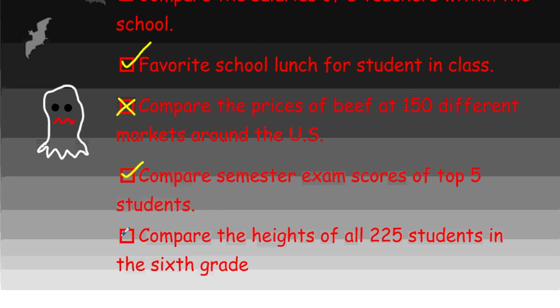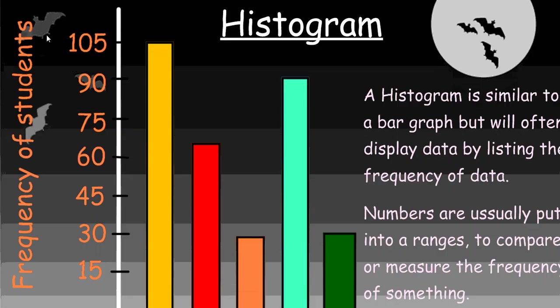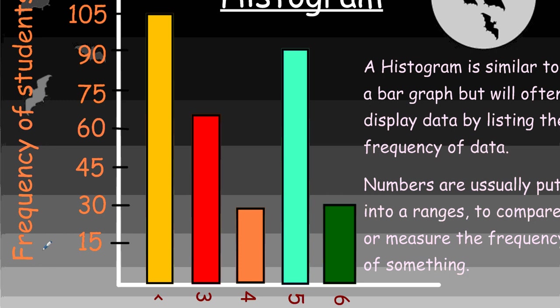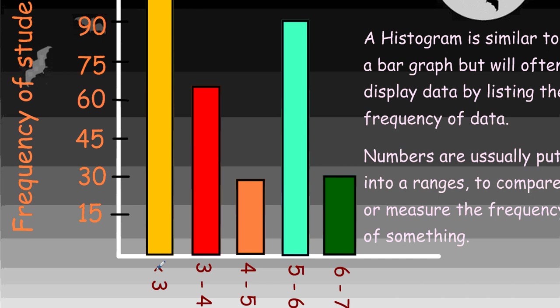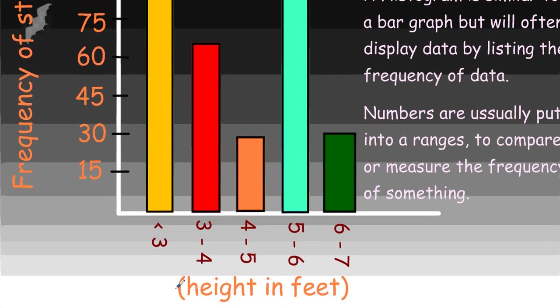Compare the heights of all 225 students in the sixth grade - no, that would not be a good one to make a bar graph for, especially considering that some of the heights could be very different. There might be five foot one inch, five foot one and a quarter inch, five foot three inches. With all those different ranges, we would actually want to use something called a histogram. A histogram helps us to see the frequency, or measures frequencies, and allows us to compare the ranges of these different things. If we look at this example, at the bottom we have the height in feet, and we have a range down here.